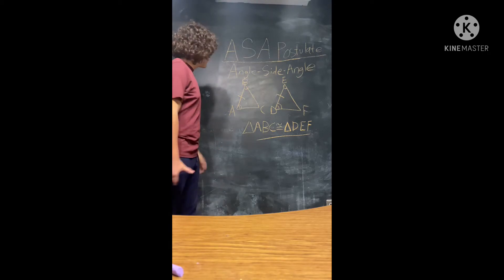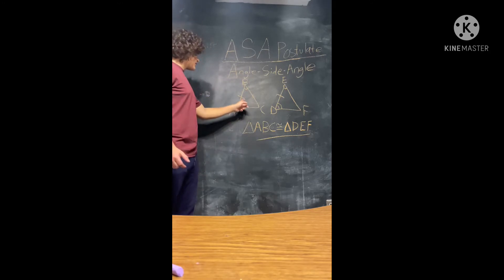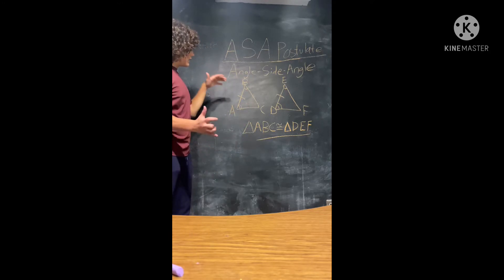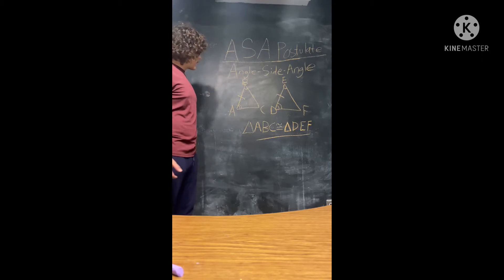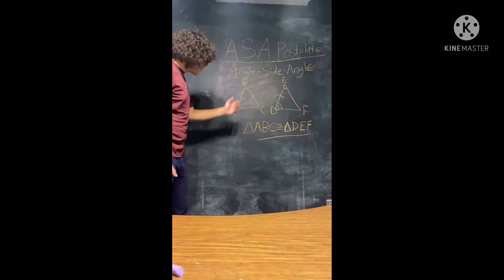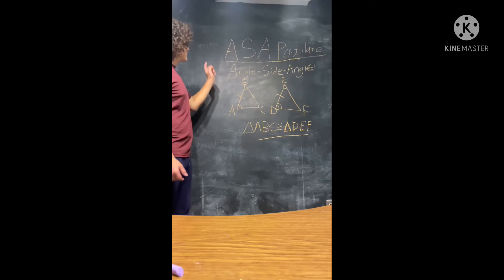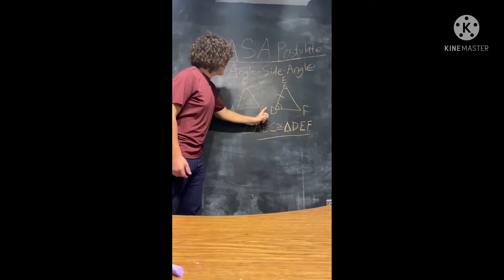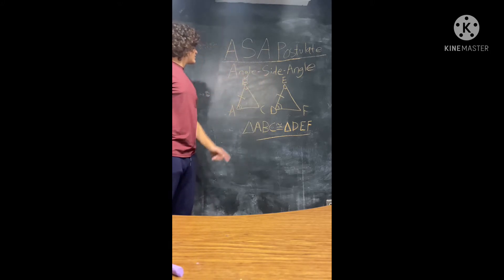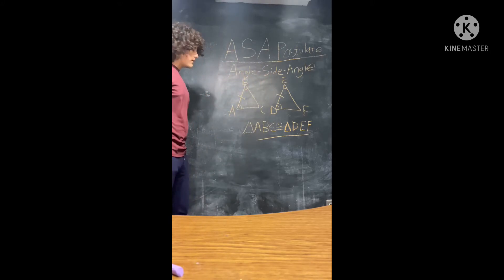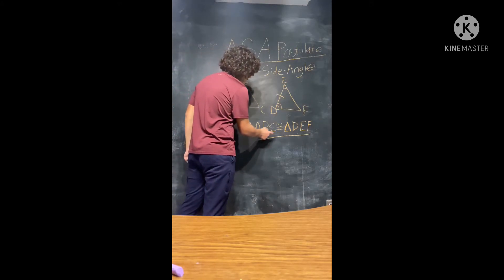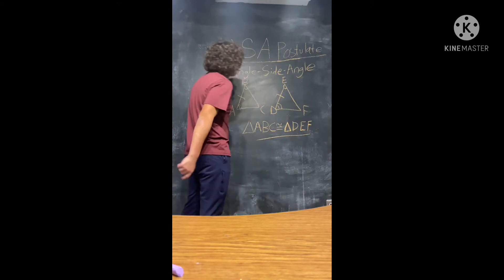An important thing to note when using A-S-A is that this side must be included, meaning it is between the two angles, as demonstrated here. Angle A is congruent to angle D, segment A-B is congruent to segment D-E, and angle B is congruent to angle E. All this information, using A-S-A, tells us that triangle A-B-C is congruent to triangle D-E-F.